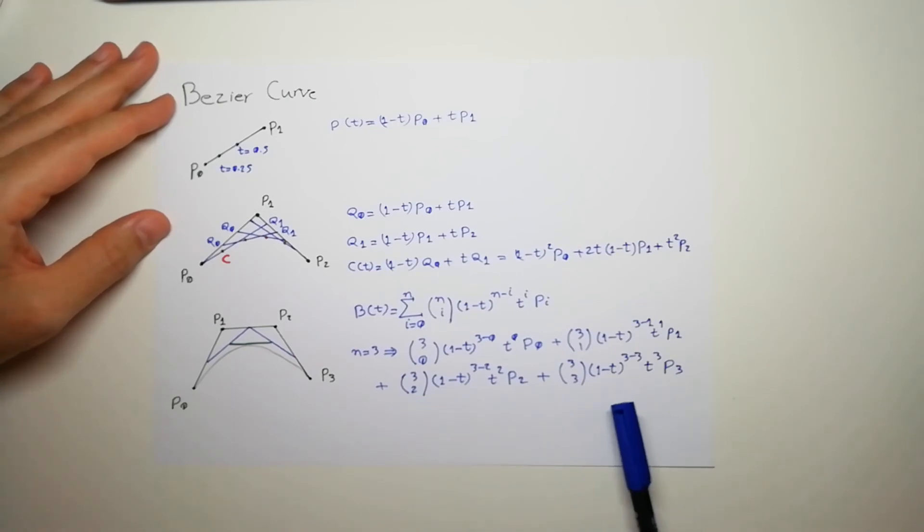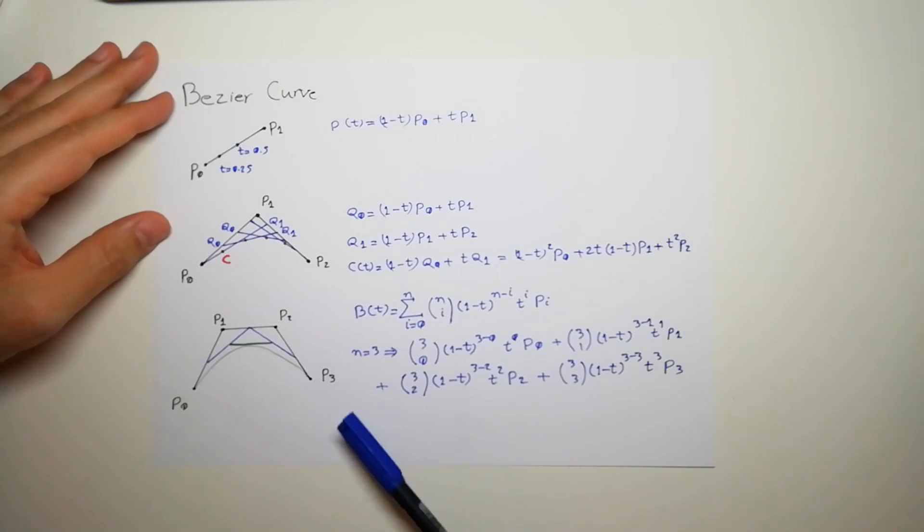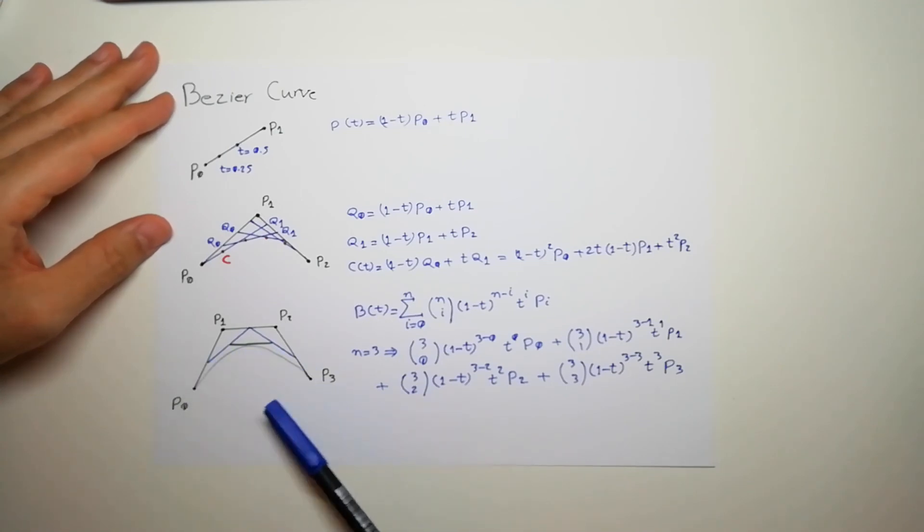You could do this for higher degrees, but usually a polynomial of third degree is usually okay and the curves are pretty smooth, and you can interpolate as many points as you need. Thank you.